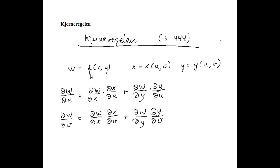Let's recall the chain rule for partial derivatives. If w is a function of x and y, which we call f, and x is also a function of two new variables u and v, and y is a function of u and v, then the partial derivative of w with respect to one of these new variables, namely u, is equal to the partial derivative of w with respect to x multiplied with the partial derivative of x with respect to u.